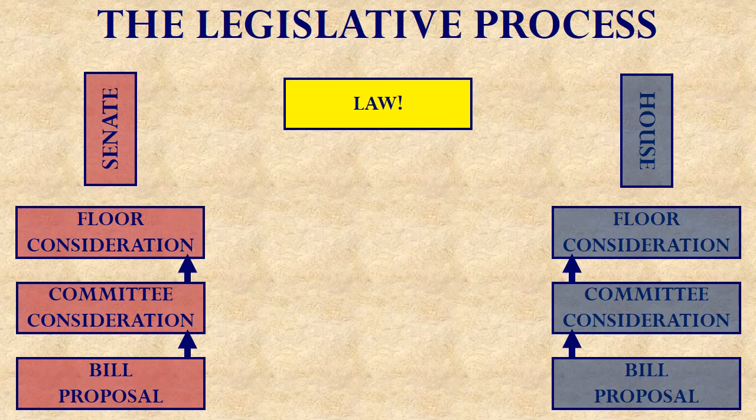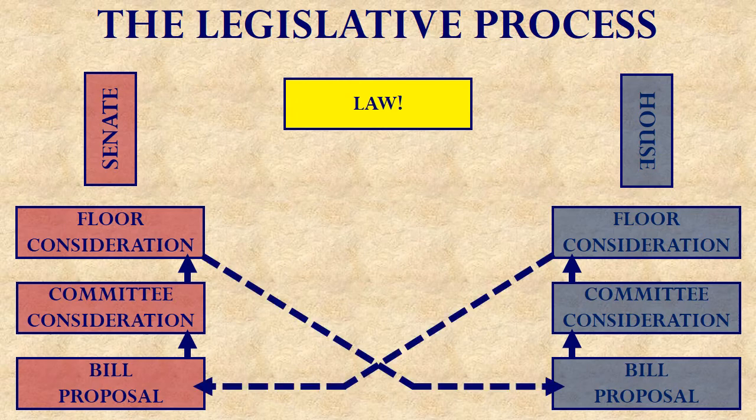Bills are considered by the entire floor in whichever chamber they're in at that moment. Eventually, after floor consideration, if a bill passes, it is then sent to the other House to be considered. A bill beginning in the House, if it manages to work all the way through the process and eventually be approved on the floor by a majority, it's sent over to the Senate to be approved. Similarly, if a bill manages to work its way all the way through the process in the Senate, it's sent to the House to be approved.